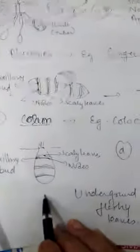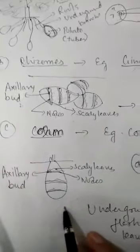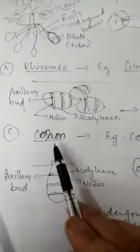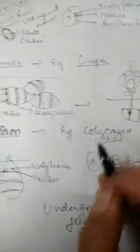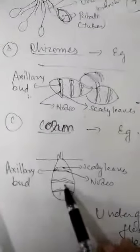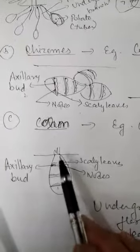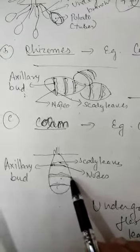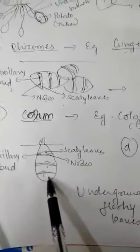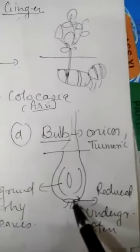The third modification of underground stem is the corm, with colocasia — called arvi in Hindi — as its example. One key difference from the rhizome is that the rhizome grows horizontally, while the corm or colocasia grows vertically. Otherwise, the characters are the same: there are nodes, scaly leaves over the nodes, and axillary buds in the axils of the scaly leaves. Corm is therefore another example of underground stem modification for food storage.